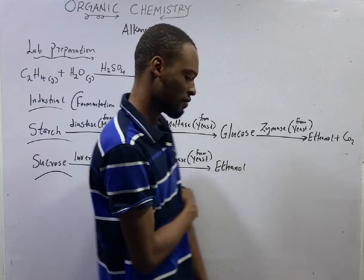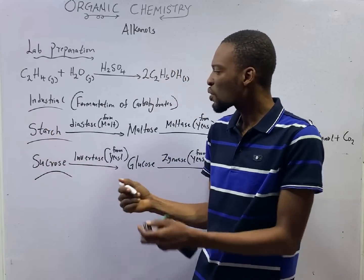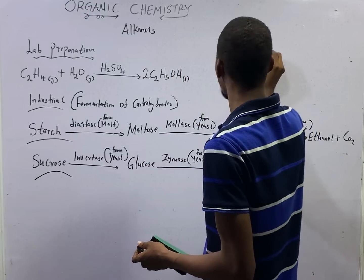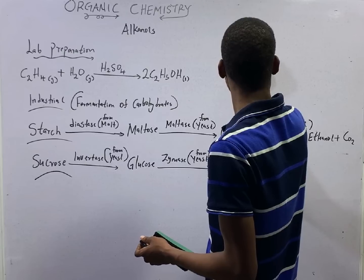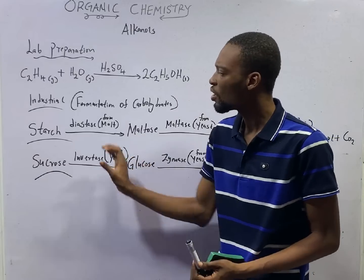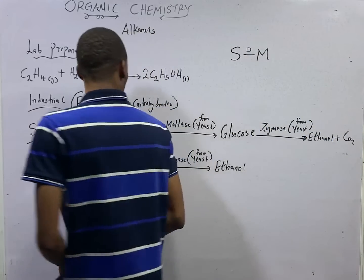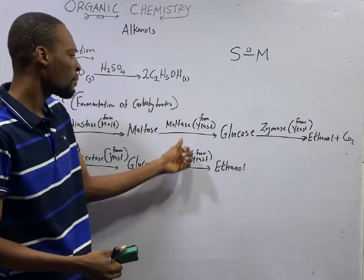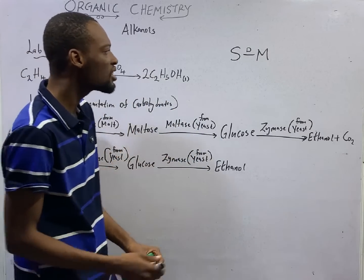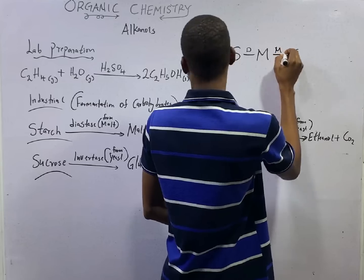When an enzyme called diastase acts on starch, it will convert this starch to maltose. Starch to maltose, diastase. This diastase is an enzyme gotten from malt. Then another enzyme called maltase, we add on this maltose to convert it to glucose.